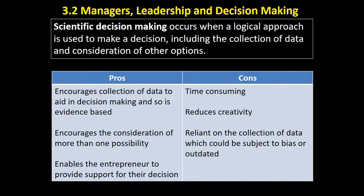However, scientific decision-making can be time-consuming. You've got to collect data, analyse it, run probability models, and discuss — all of which takes time. If a quick decision needs to be made, it may not be possible to go through the full process. It may also reduce creative thinking, and it's reliant on data collection which could be subject to bias or could be outdated.